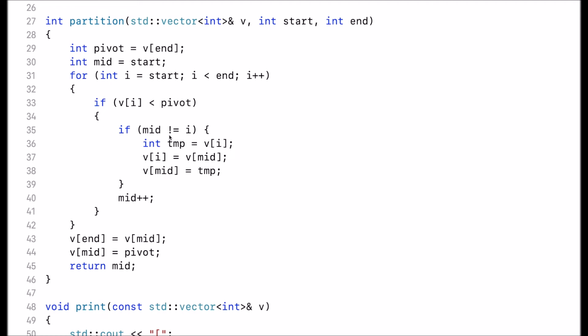Now this condition only ensures that I don't do any unnecessary swapping. If they are both the same, I basically swap the element with itself. So the condition here checks that I really swap different elements in the array. I first create a temporary variable which stores the element at index i. Then I assign the element at mid to the element at index i. And then I assign the temporary value to the element at index mid. Next, I increment mid by 1.